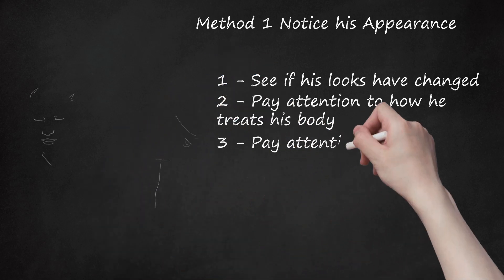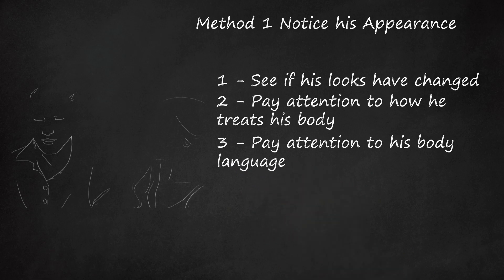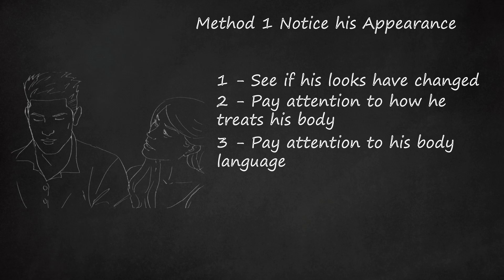Pay attention to his body language. Your man's body language can go a long way in telling you how he feels about you, and if he's really thinking about someone else instead of you. Here are a few signs that he may be cheating on you. If he doesn't make eye contact when you talk. If he used to be Mr. Eye Contact, but now he always looks away or at the floor when you speak, then he may be doing it out of guilt.